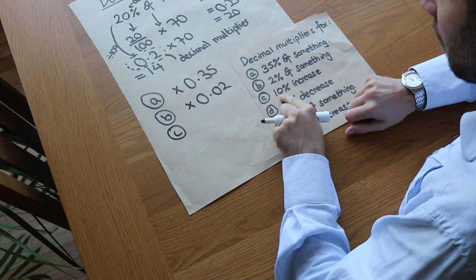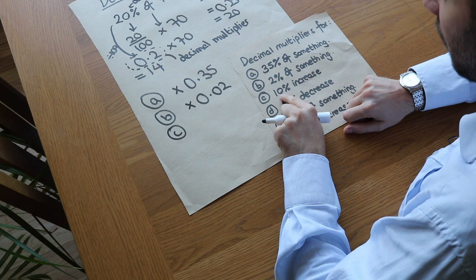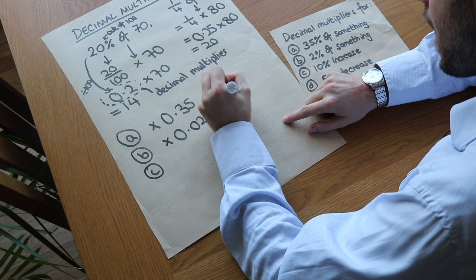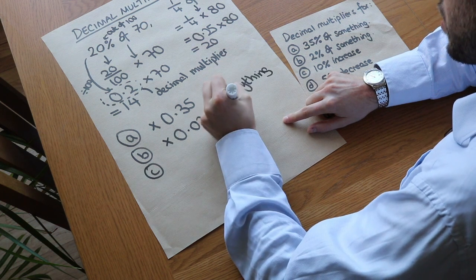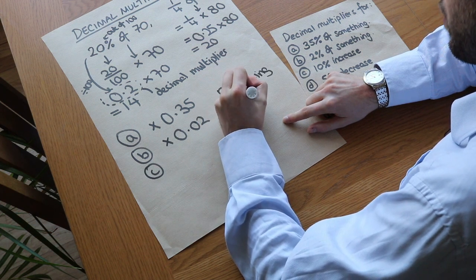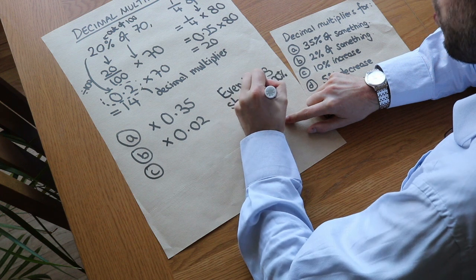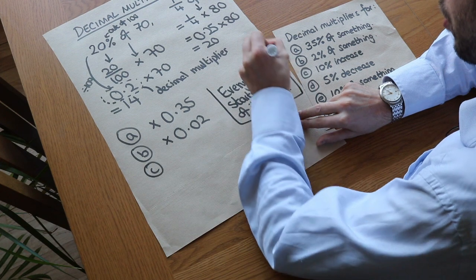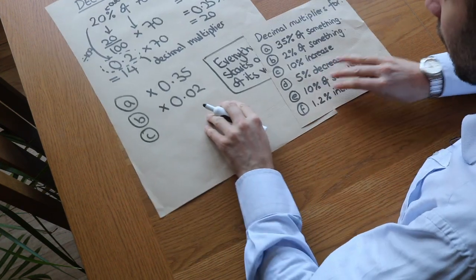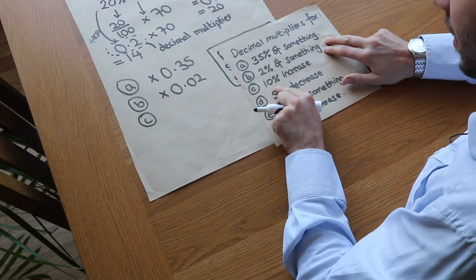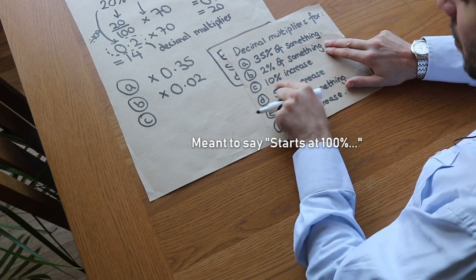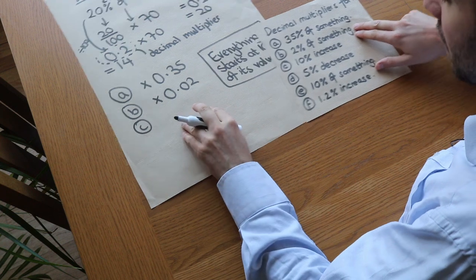What about C - how do we find a 10% increase? What do we multiply by? The key here is to note that everything starts at 100% of its value. So if you have all of something, you have 100% of it. So if something has a 10% increase, it starts at 100% and then goes up by 10% to 110%.